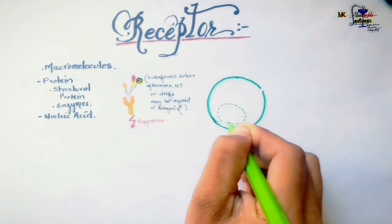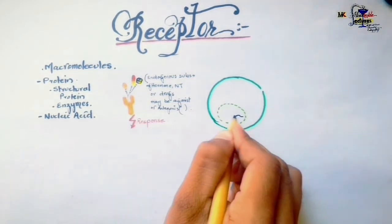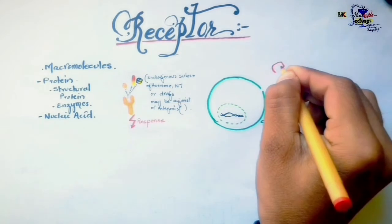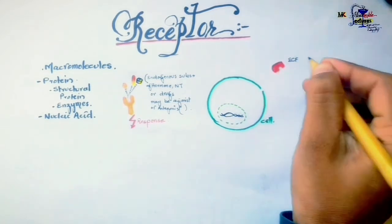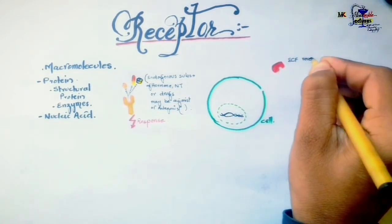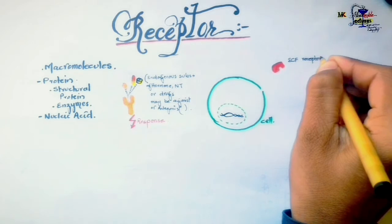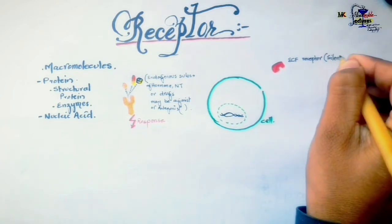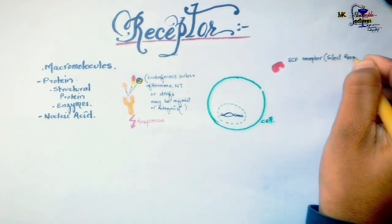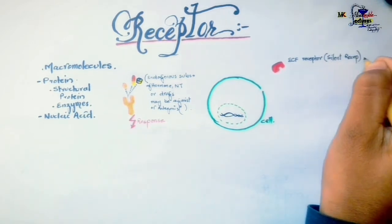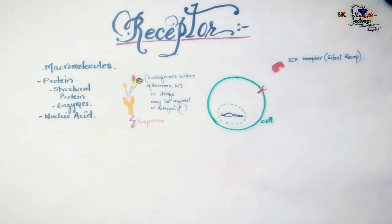Receptors may occur extracellularly, in the cell membrane, or intracellularly. Receptors that occur extracellularly are mostly silent receptors — drugs bind to them but don't show any pharmacological effect. For example, blood albumin, to which many drugs bind but don't show any effect; it acts as a drug reservoir. Most receptors are present in the cell membrane — for example, adrenergic receptors,